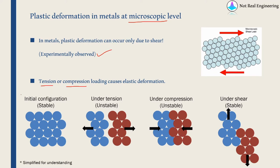It is important to understand why this is happening. Let's assume this is the initial configuration of a metal or crystal with individual atoms in an orderly structure. As I said, atoms arrange themselves in this orderly fashion because this is the minimum energy configuration — so it is stable.